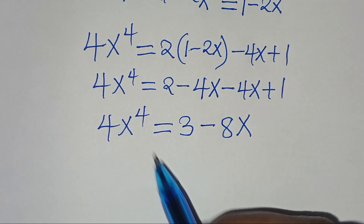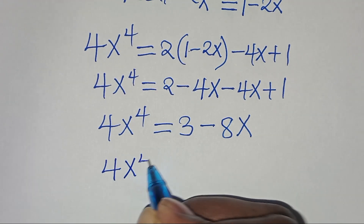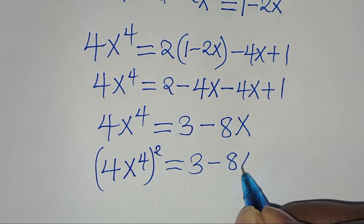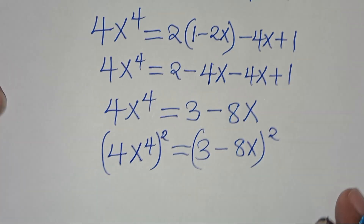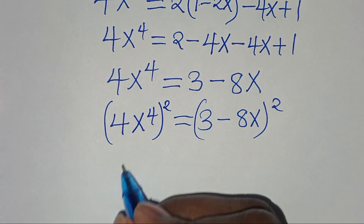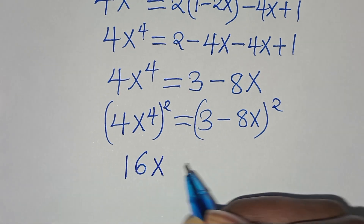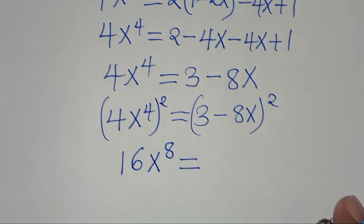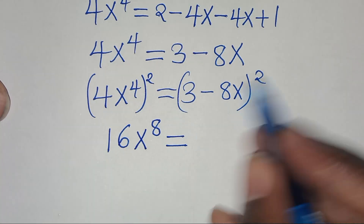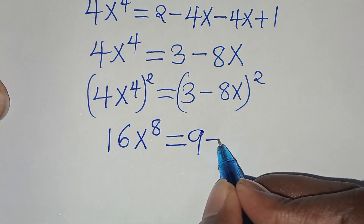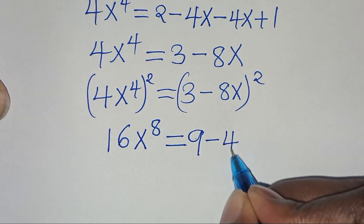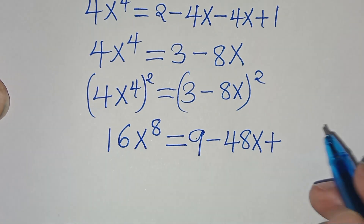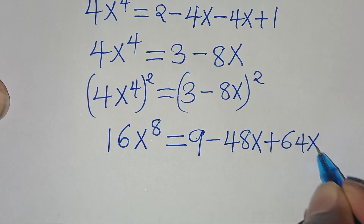Let's proceed to square this expression, so we have 4x to the power of 4 raised to the power of 2, equal to 3 minus 8x raised to the power of 2. So here we have 4 squared which is 16, times x to the power of 8, equal to 3 squared which is 9, minus 2 times 3 times 8x which is 48x, plus 64x squared.